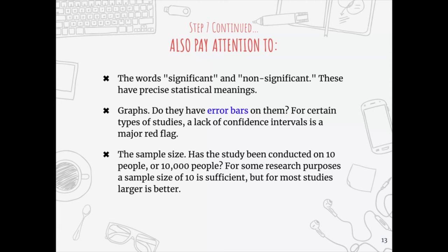Just because a paper is published and peer-reviewed doesn't mean that a reader — even an undergrad — can't pick out errors or points of disagreement. When you find those errors or disagreements with an author, that's an excellent entrance into discussing a debatable topic, because you already have a credible source within the field's discourse that you can engage with. Also pay attention to sample size: has the study been conducted on 10 people or 10,000? For most studies, larger is better.